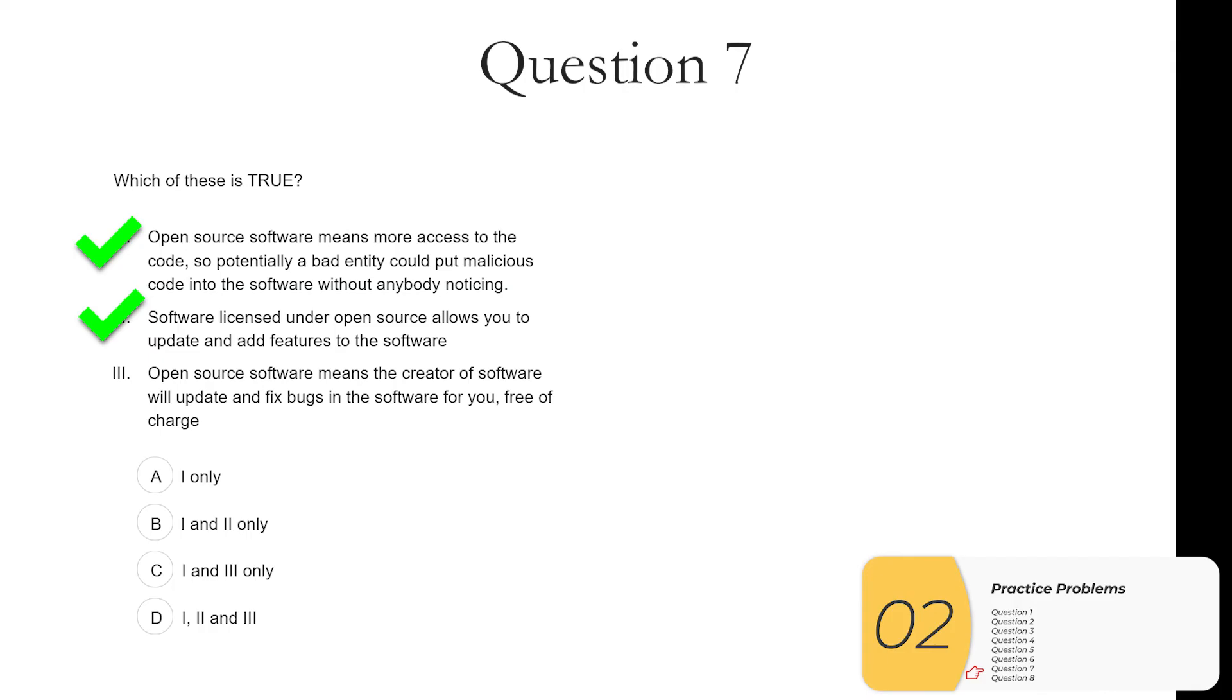Three. Open source software means the creator of the software will update and fix bugs in the software for you free of charge. This is not true. They will fix bugs and update the stuff whenever they darn feel like it. Now if you pay them, they might do it in a more timely manner, but again they are not obligated to do so. So one and two are true, so the answer we're looking for is B.